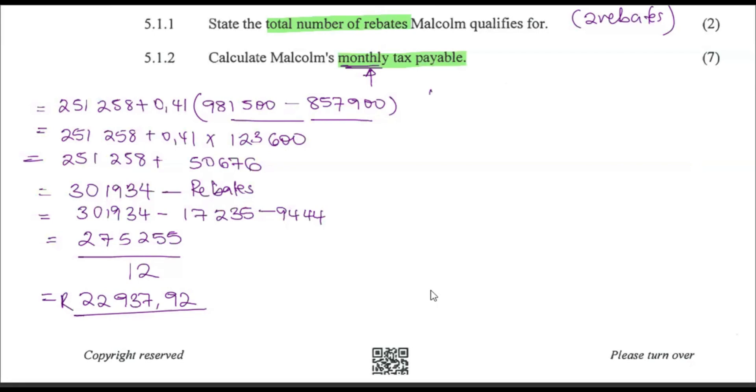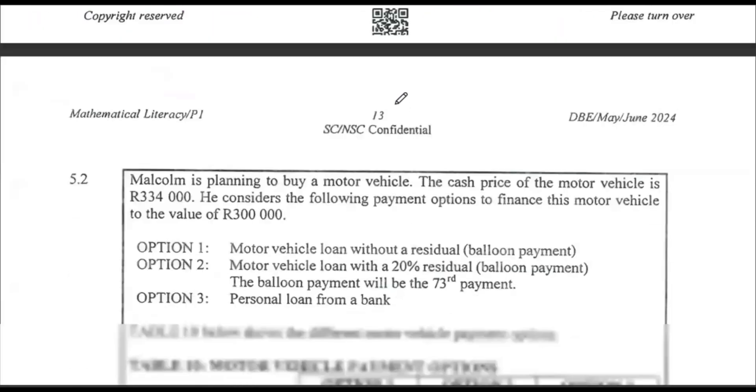Here are the four steps: One, identify the bracket. Two, substitute into the bracket. Three, remove the rebates. Four, divide by 12 because you're looking for monthly. That's how we're supposed to do it. Go to question number 5.2.